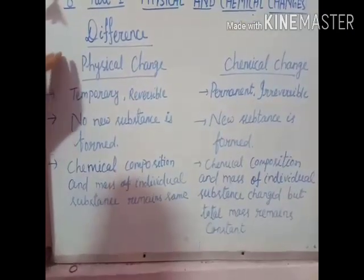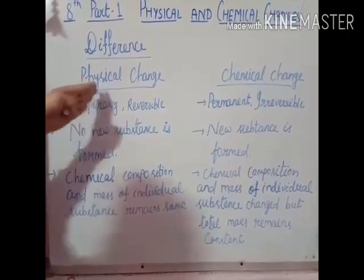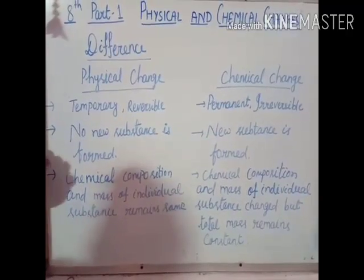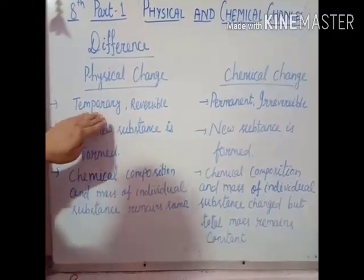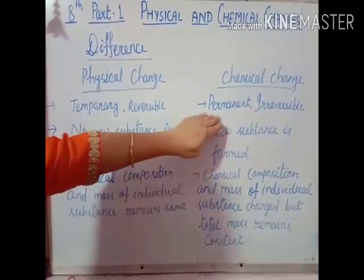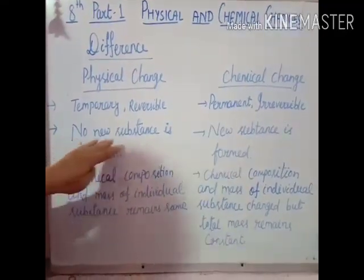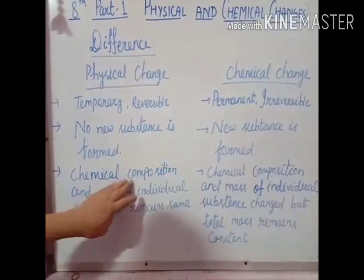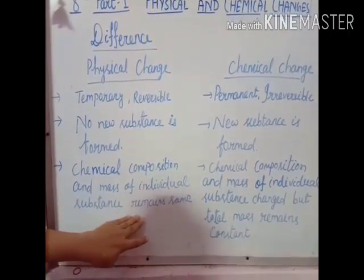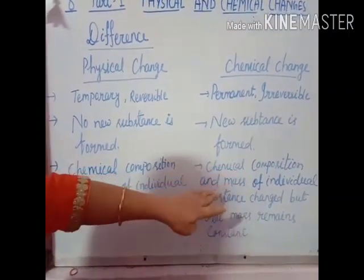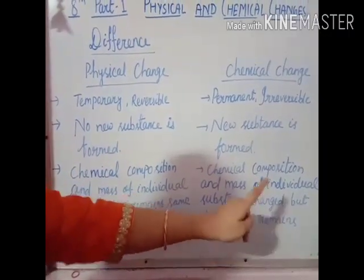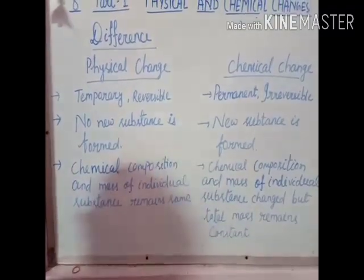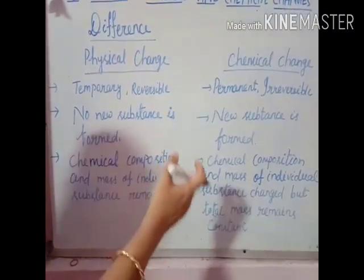Now let's recapitulate and write the differences between physical change and chemical change. Physical change is temporary and reversible; chemical change is permanent and irreversible. In physical change, no new substance is formed; in chemical change, a new substance is formed. In physical change, the chemical composition and mass of the individual substance remains the same; in chemical change, the chemical composition and mass of the individual substance changes — but remember, the total mass remains constant, which is the law of conservation of mass.